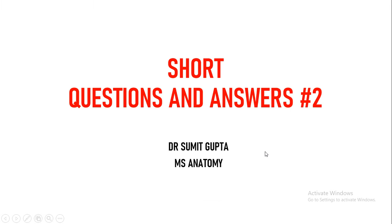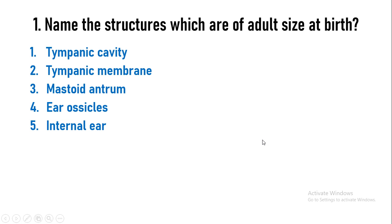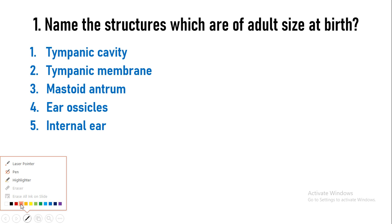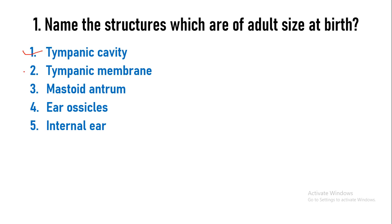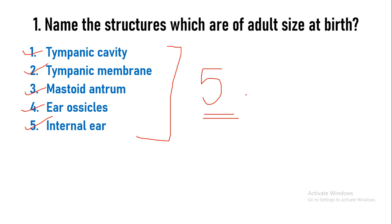We will discuss the next part of the short questions. The first question is: name the structures which are of adult size at birth. There are five structures: the tympanic cavity, tympanic membrane, mastoid antrum, ear ossicles (that is malleus, incus, stapes), and the internal ear. The meaning of this question is that these five structures are of constant size throughout the whole age of an individual.